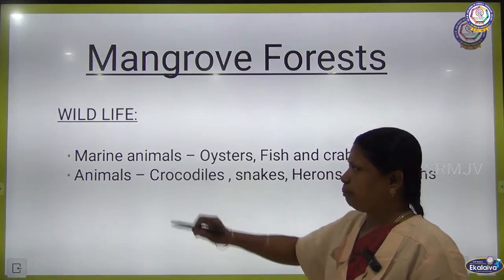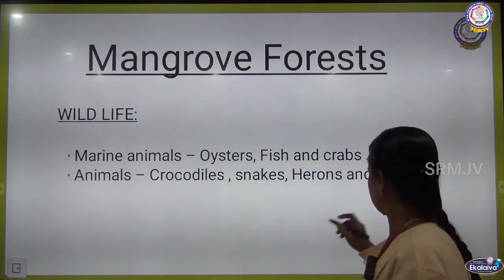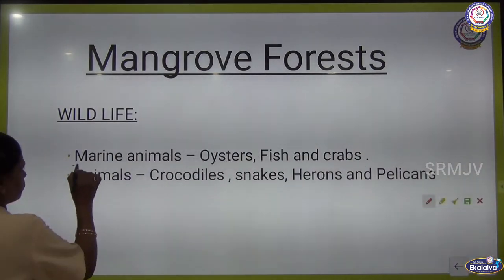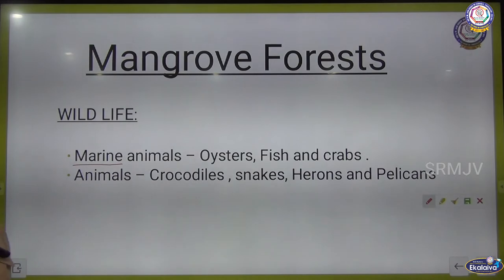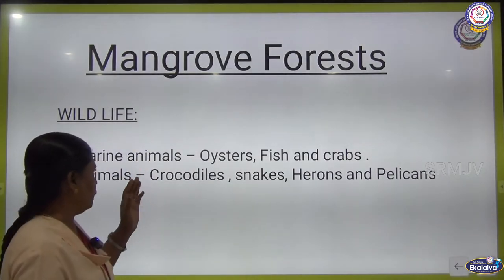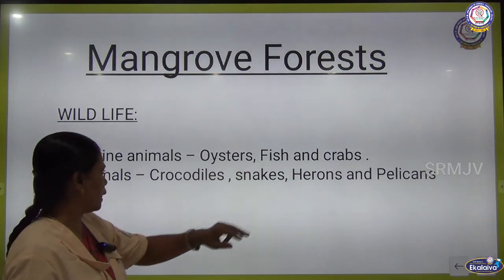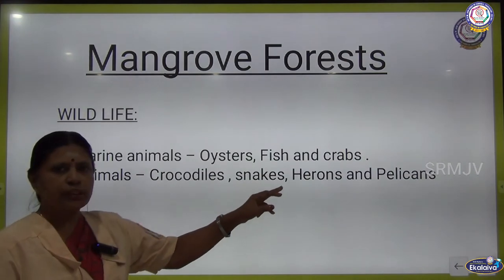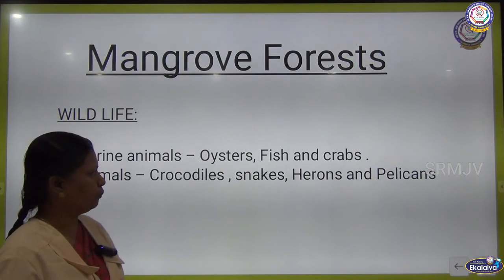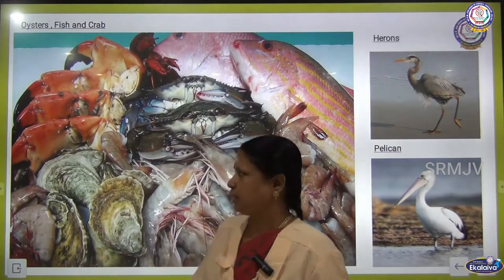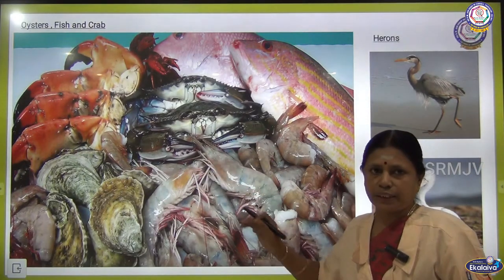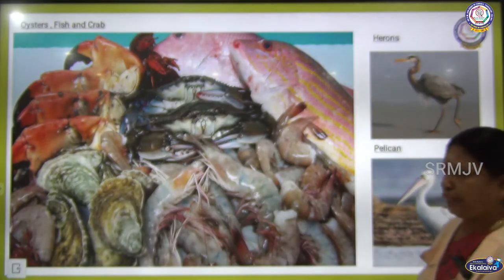Animals in the mangrove forest include marine animals — animals which live in water. Animals like oyster, fish, and crab, as well as crocodile, snakes, herons, and pelicans can be seen in mangrove forests. You can see the pictures of fish, oyster, crab, herons, and pelicans.